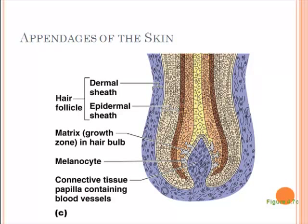Around the hair follicle we have a dermal sheath shown in blue, which is connective tissue. The epidermal sheath comes clear down into the dermal layer, and this is where the hair arises from. Blood vessels — arteries and veins — are coming in and out of this area but are still in the dermal layer, not in the epidermis. The blood vessels are always associated with the connective tissue when talking about the skin. Epithelial tissues are avascular.